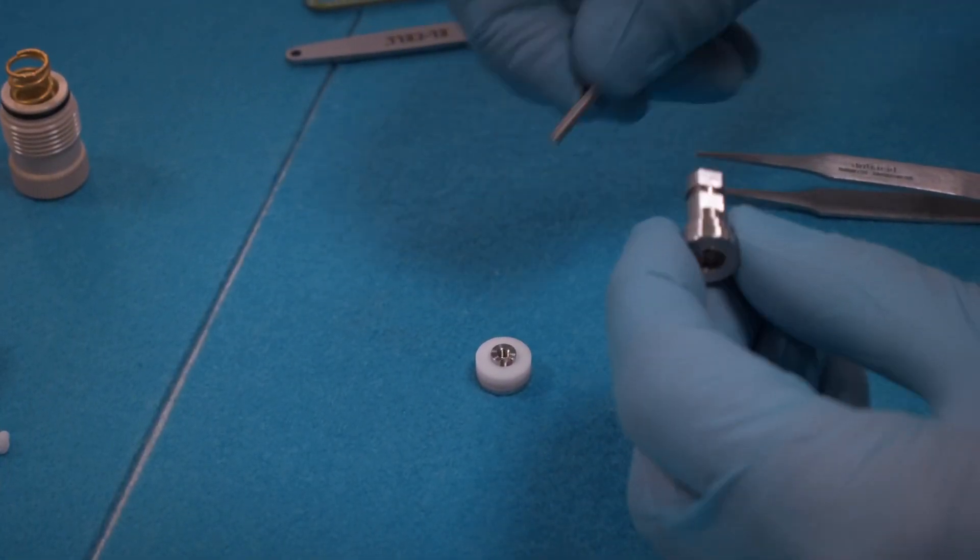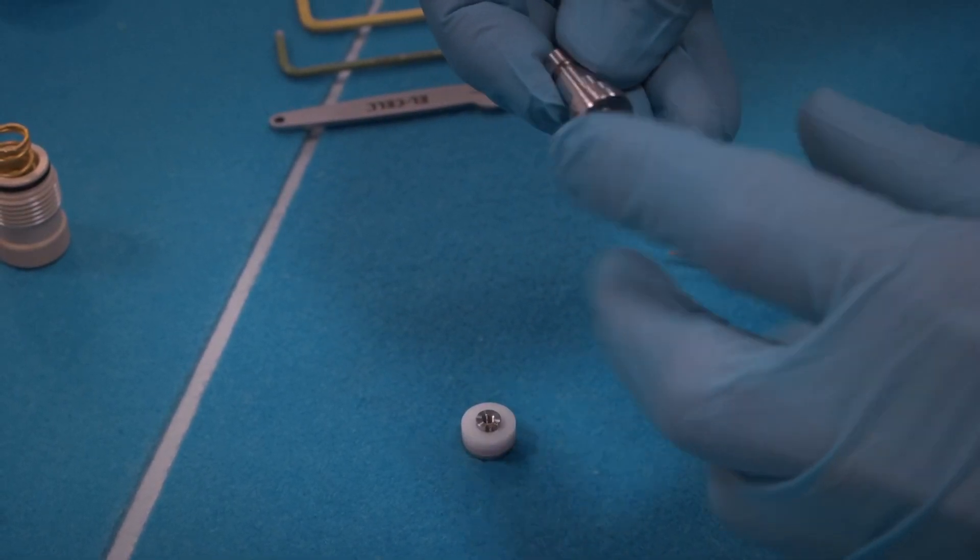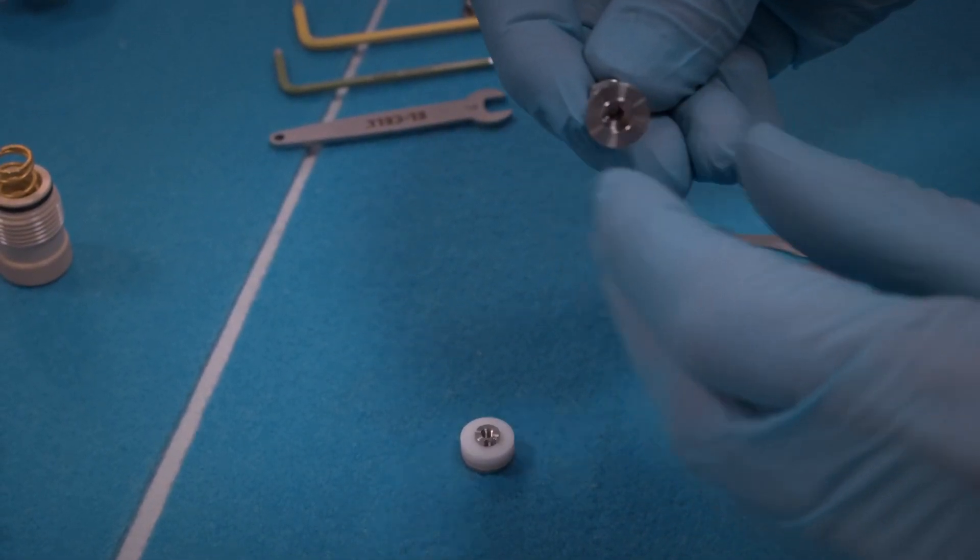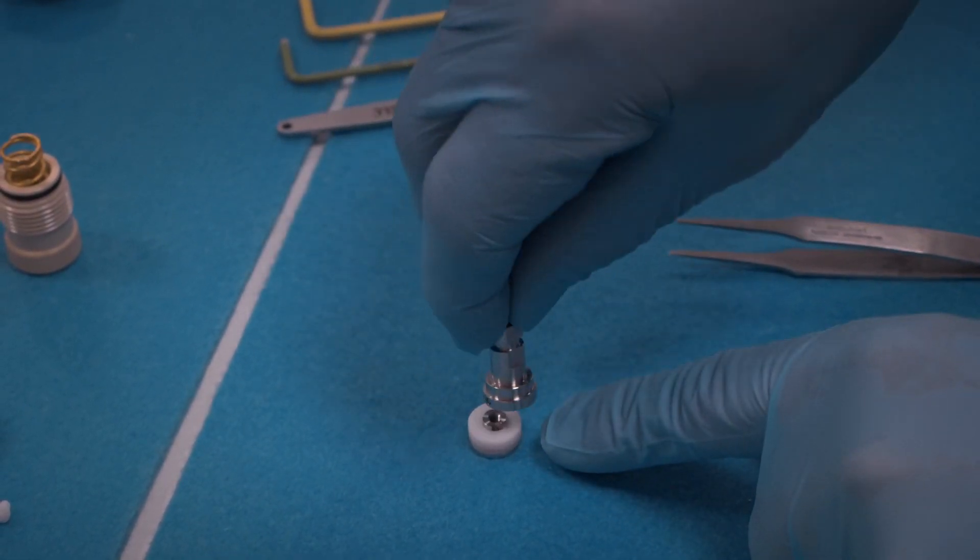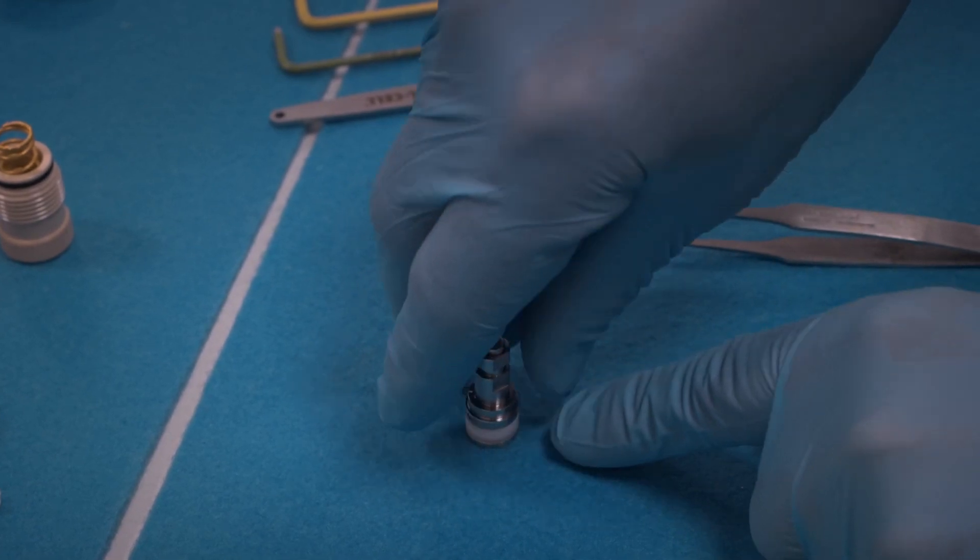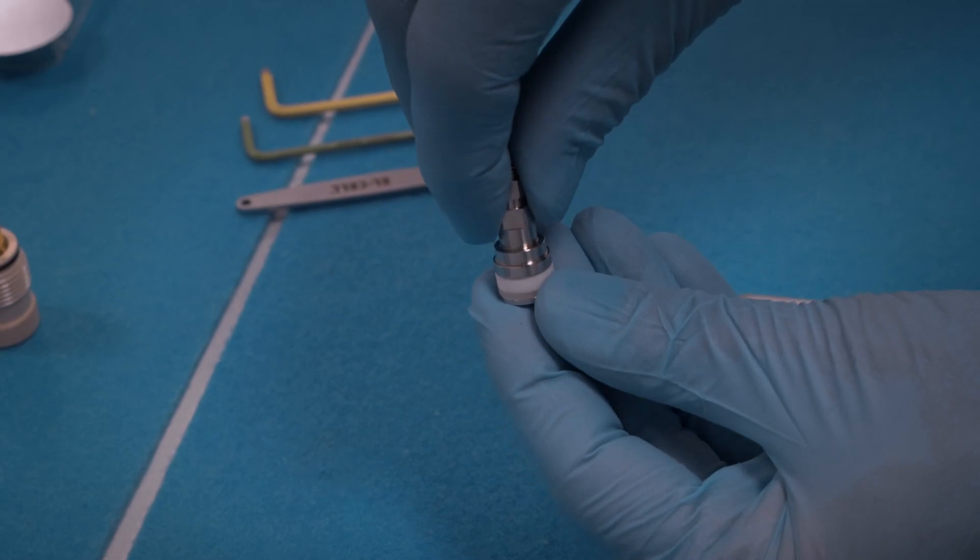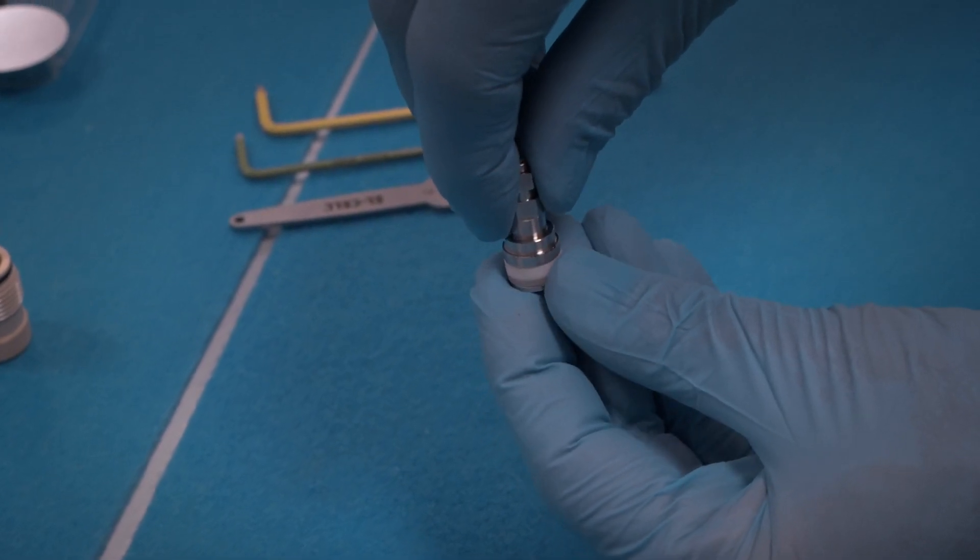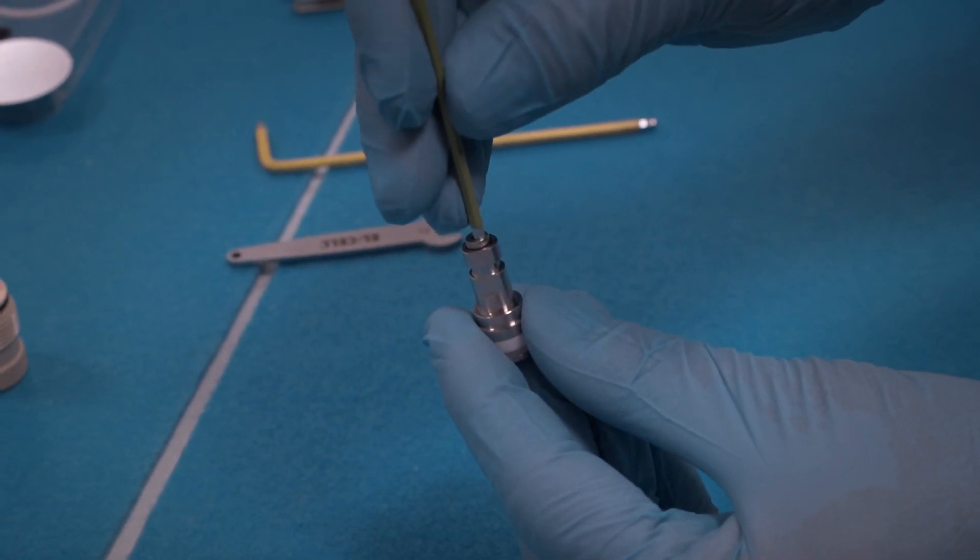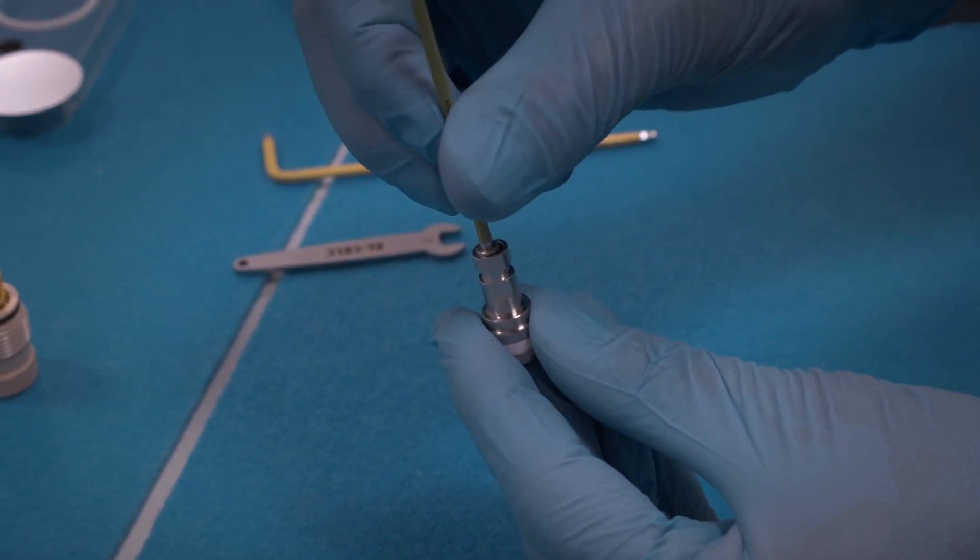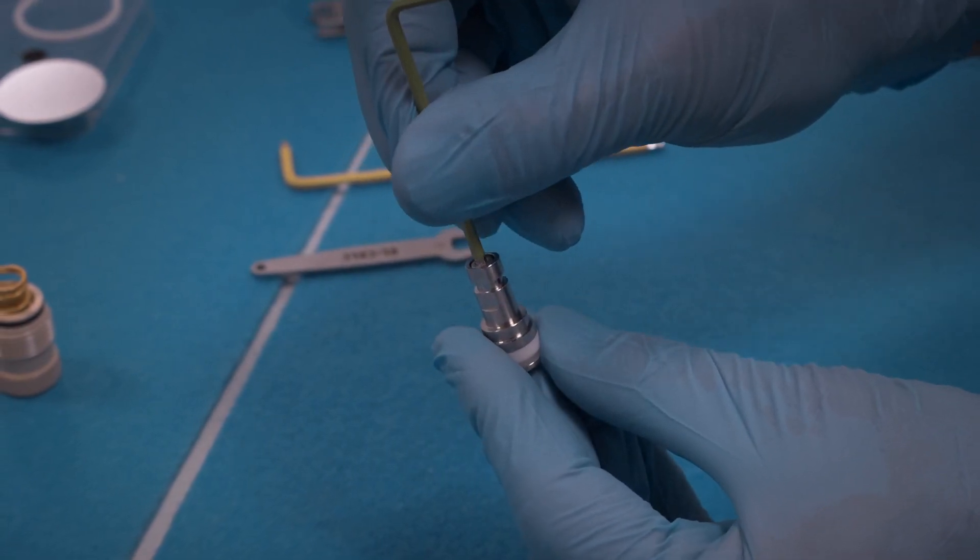Attach the lower part of the piston with the set screw inserted. Make sure that the set screw is aligned with the notch in the upper part. By turning, ensure the two parts are properly in position, then only gently tighten the screw at this point.